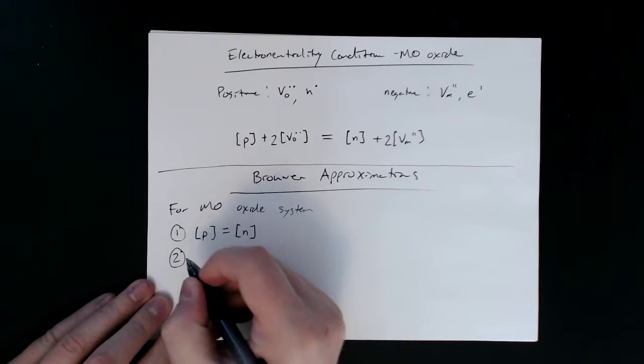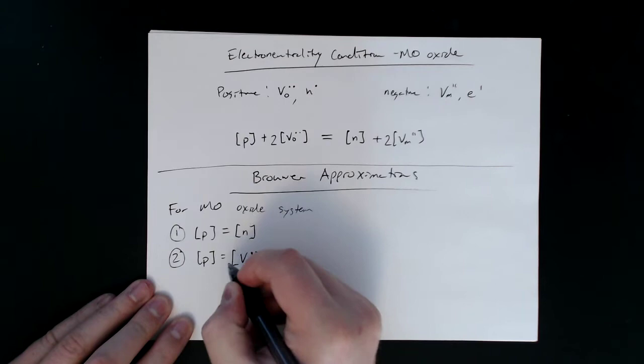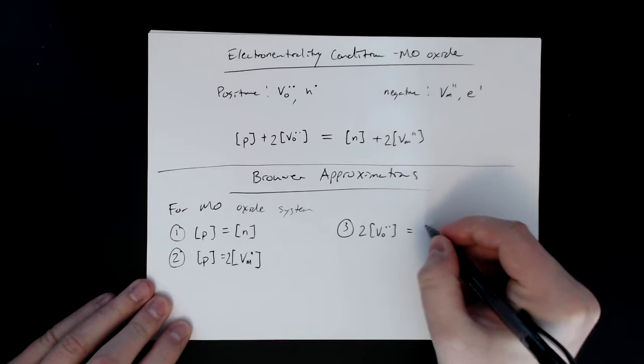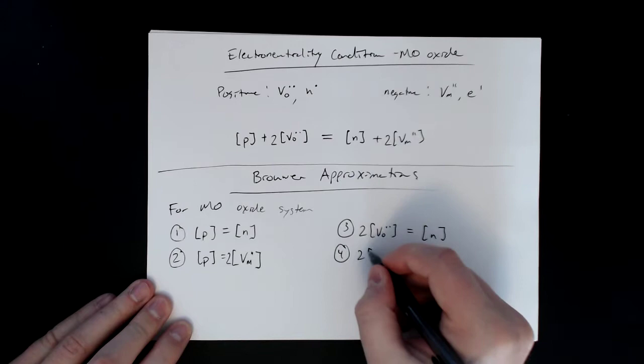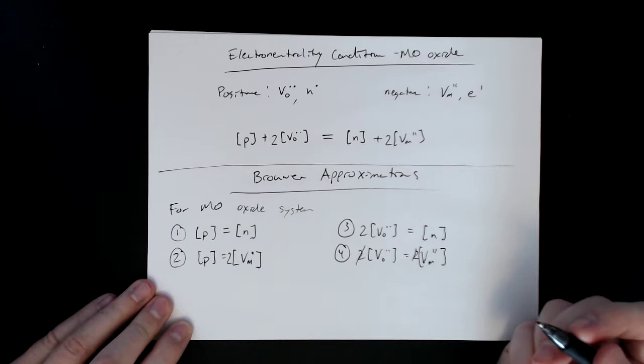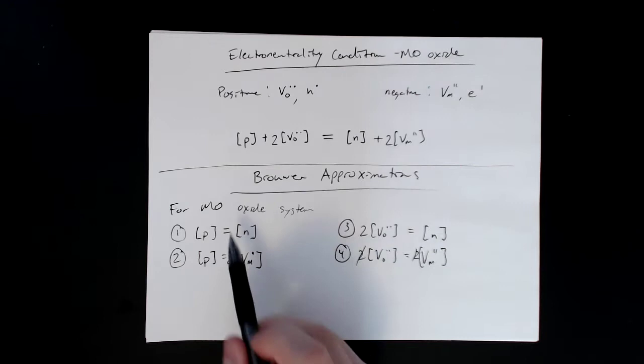And then two, we can still pick electron holes but instead of electrons we pick the metal vacancies, and we leave the two there as well. Three, now we move to this one, so we have two oxygen vacancies, and that equals electrons. And then the last one is oxygen vacancies equals the metal vacancies, and in this case we can get rid of those twos because they're going to cancel out. So now that we've kind of identified all the possibles...